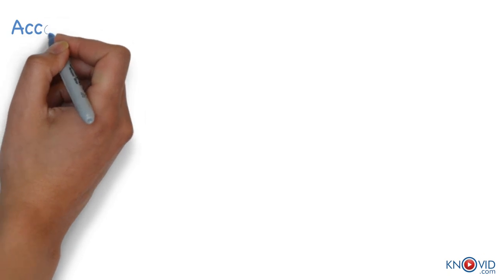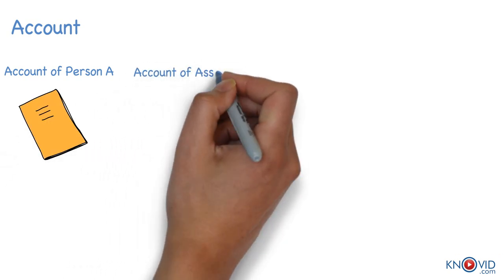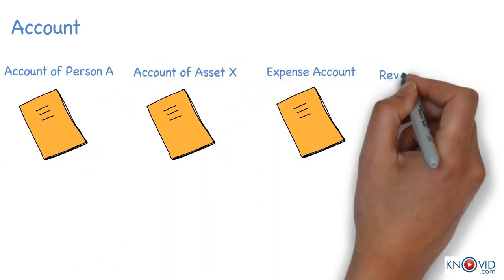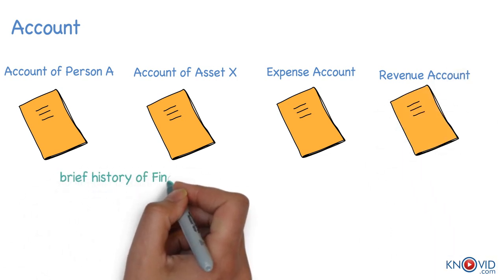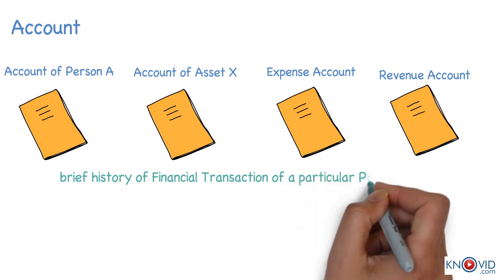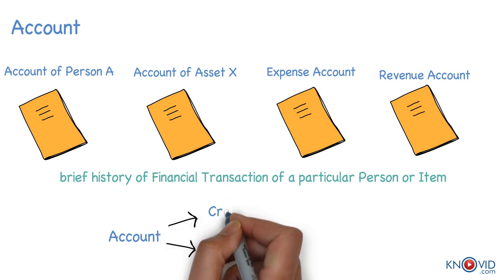Account is a summary of relevant business transactions at one place relating to a person, asset, expense or revenue. An account is a brief history of financial transactions of a particular person or item. An account has two sides called debit side and credit side.